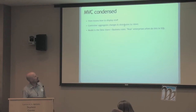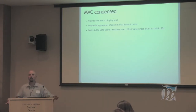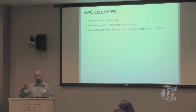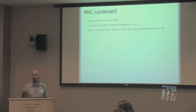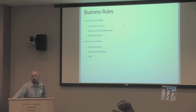The view knows how to display stuff, the controller aggregates changes and distributes them to views, the model is the data store and business rules. Real enterprises often do the model in SQL — Oracle is all about an SQL database but also about rules, so you can't make a debit to one account without making a credit to another. Lots of integrity checks go into business rule things like trying to move too much money, or 'that's not a valid password.' Examples of things that might show up in business rules include inventory control.